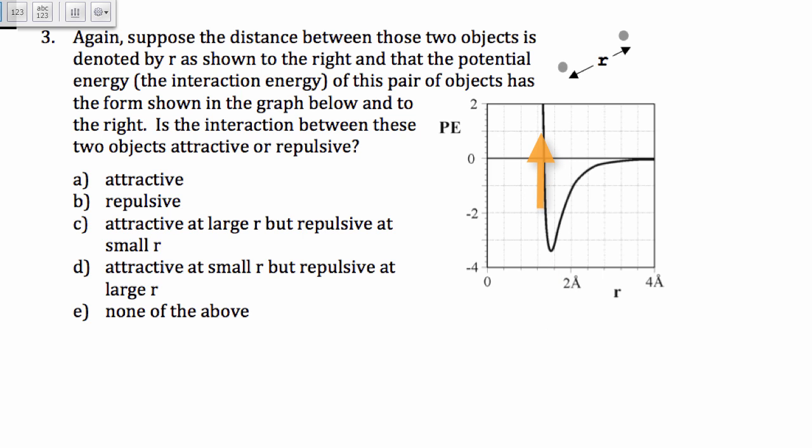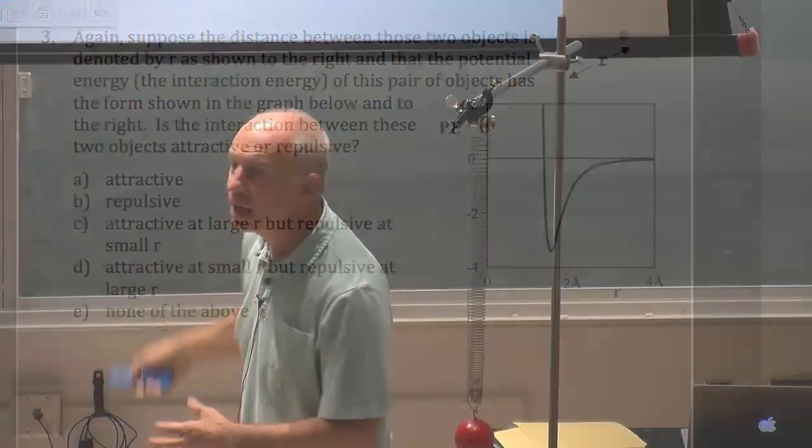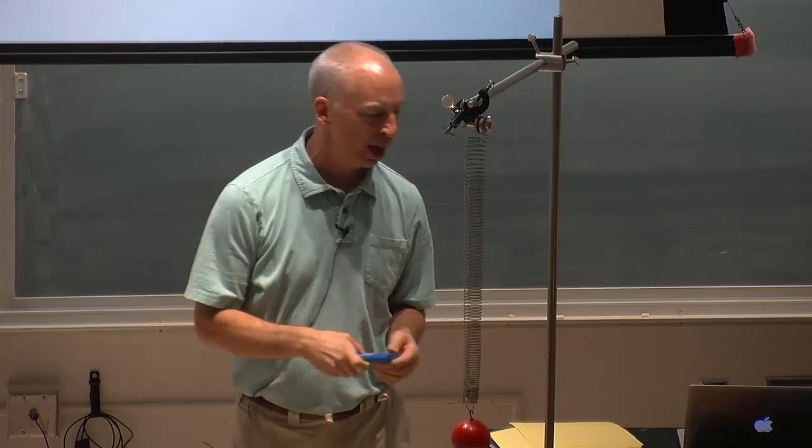When they get too close together, then they start to repel each other. And the potential energy can go down if they're farther apart at that point. This is a kind of generic picture for a chemical bond.